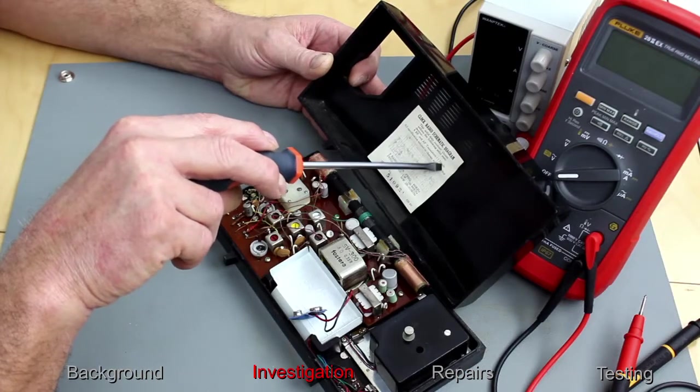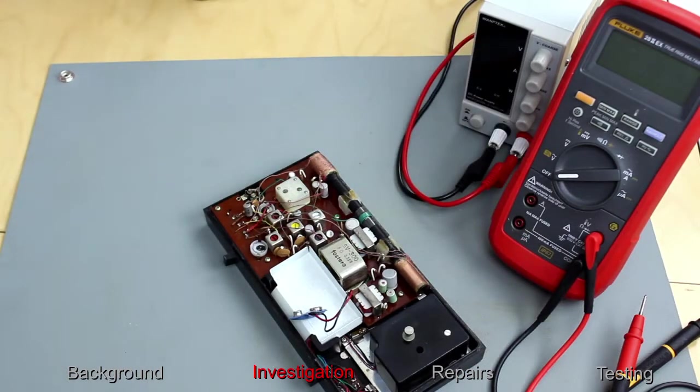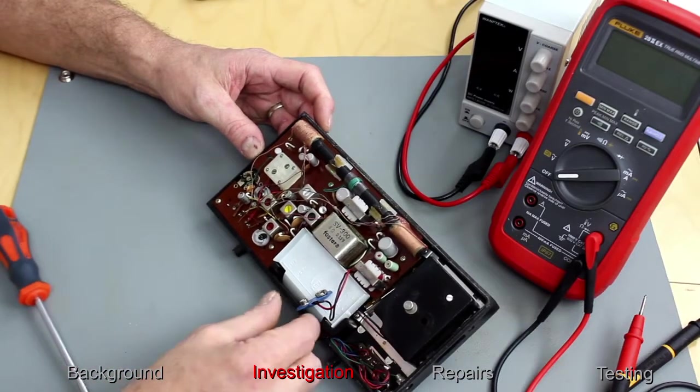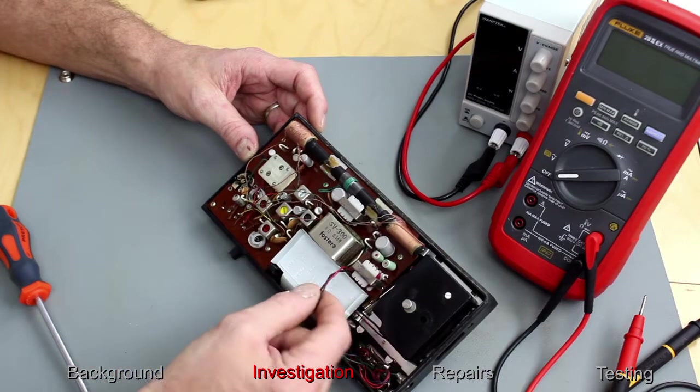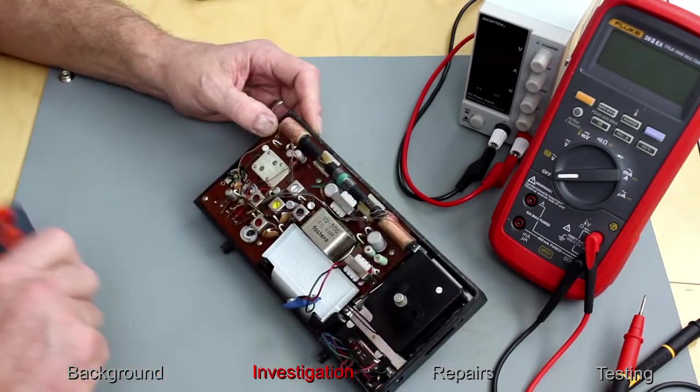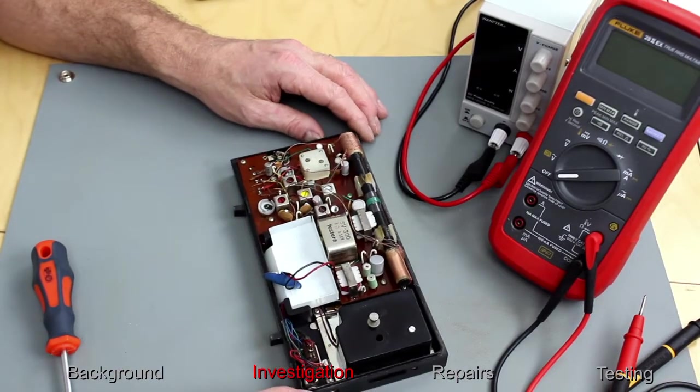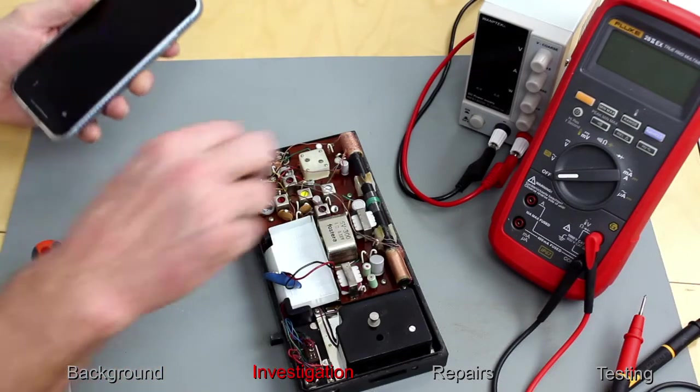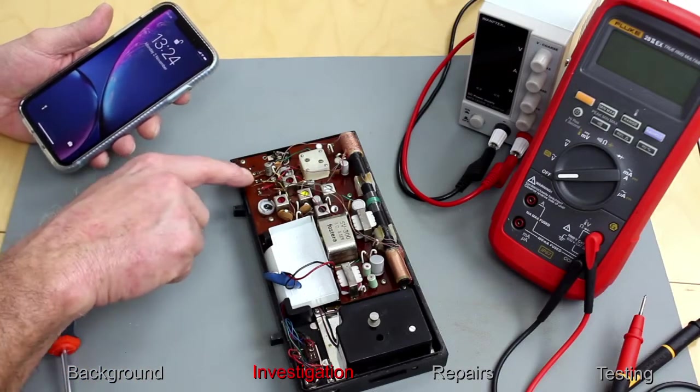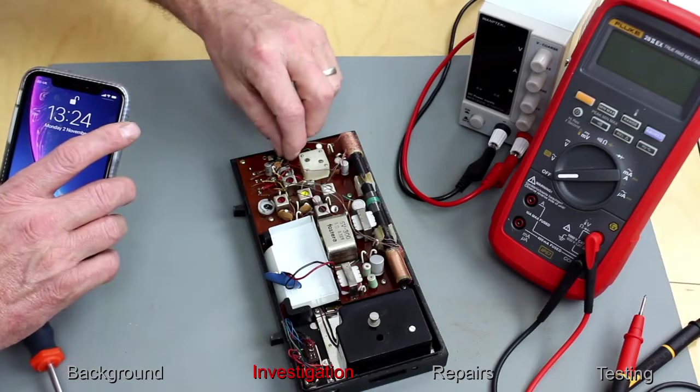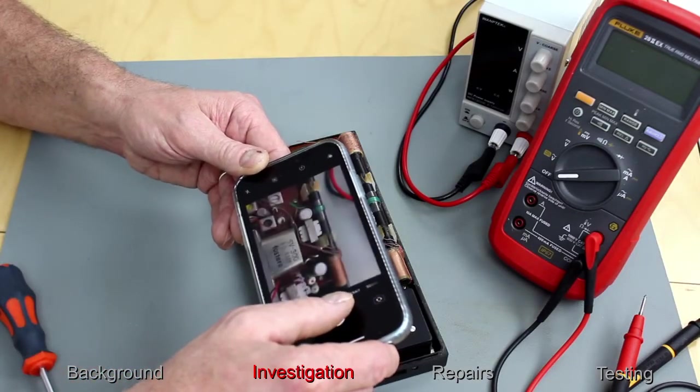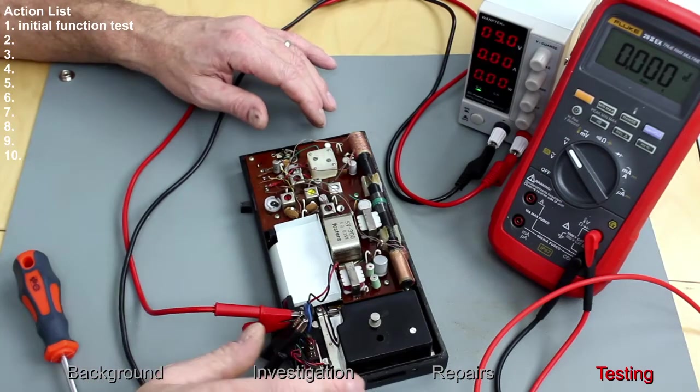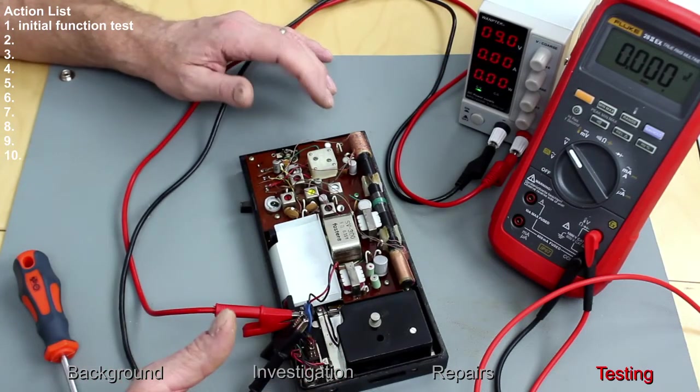Says PP6 9 volt Ever Ready battery or equivalent. First job is to photograph this in case any of these cables come off during the pulling around because these are very fine and difficult to work out where they went to. Using a bench power supply because I can actually see the current being drawn rather than if I used a battery.